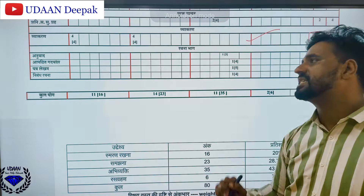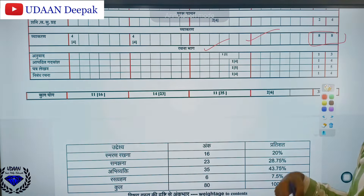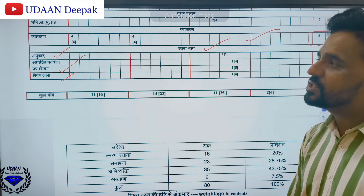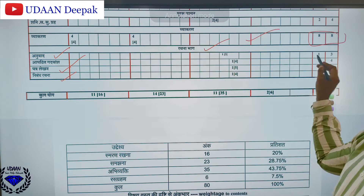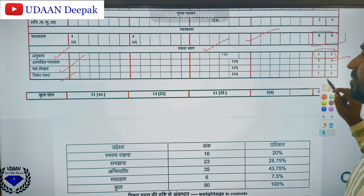Coming to Vakaran — that is the grammar part. You will get a total of eight marks from grammar in the question paper. Similarly, Rachana Bhav — that is additional grammar — what you will get: composition and literature. Then a patith gadyansh, patralekan, nibandh — that is essay, letter writing, and comprehensive passage. Gadyansh means comprehensive passage.